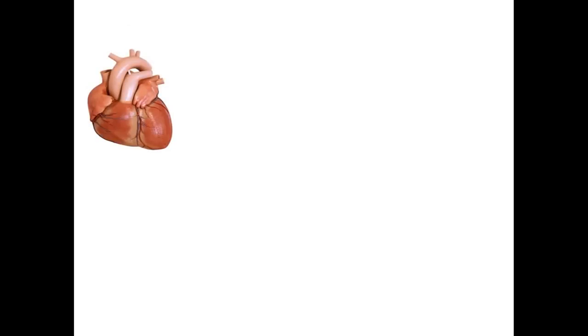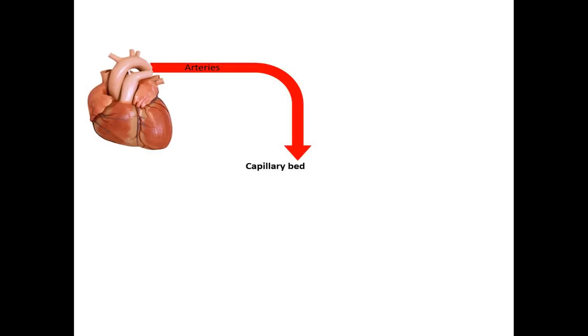First we must understand what a portal system is. In the systemic circulation, blood is pumped from the heart into the arteries, from there it enters a capillary bed, and this is drained by veins which return the blood to the heart.